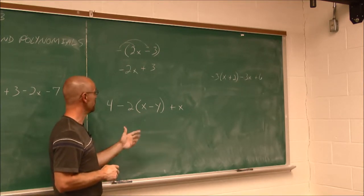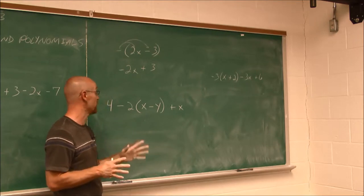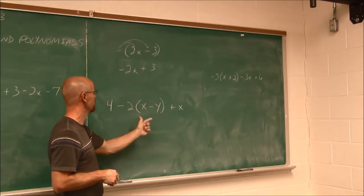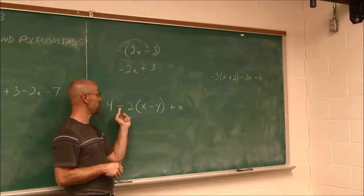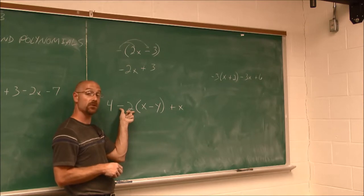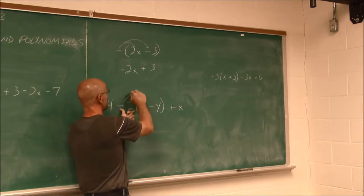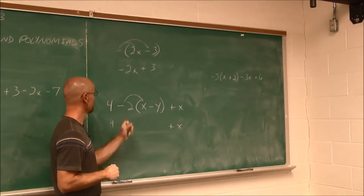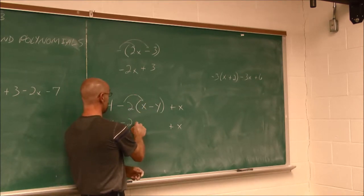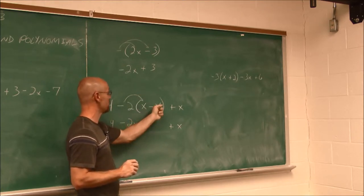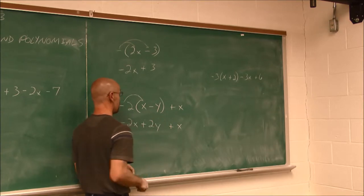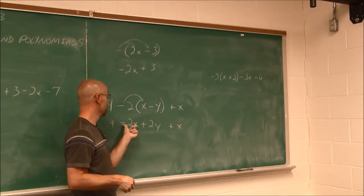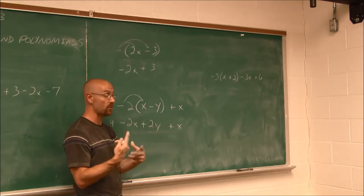Let's look at this example with parentheses. Order of operations says deal with those parentheses first. I distribute negative 2 through the parentheses — that sign belongs to the number 2, making it an integer of negative 2. Negative 2 times x is negative 2x. Negative 2 times negative y — a negative times a negative — is positive 2y.